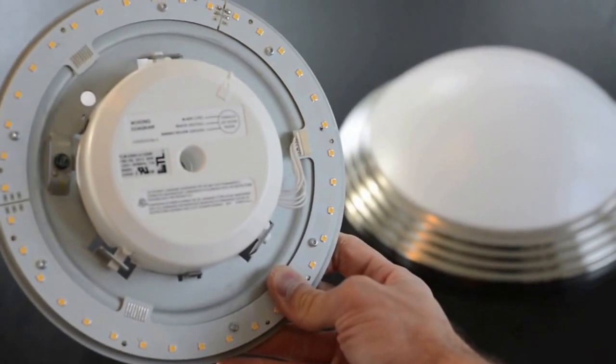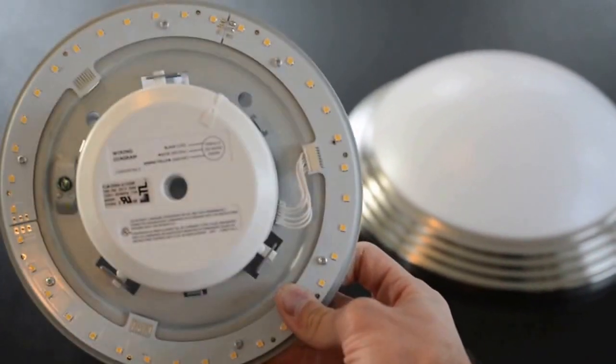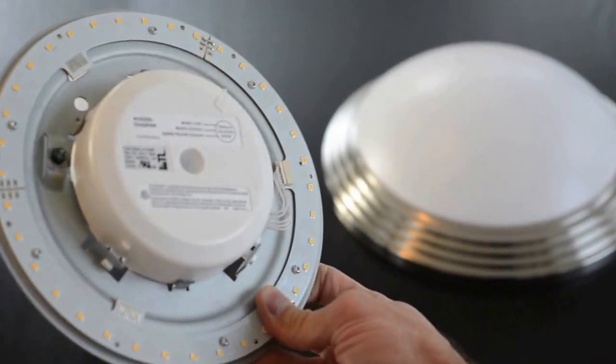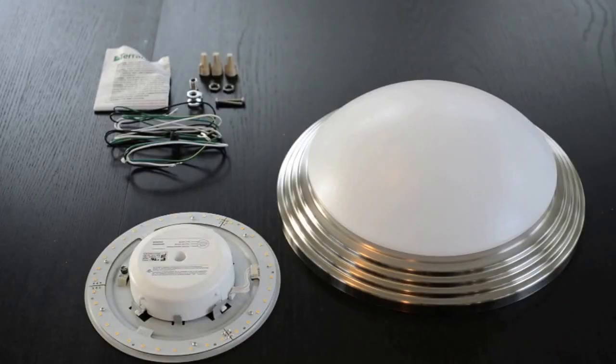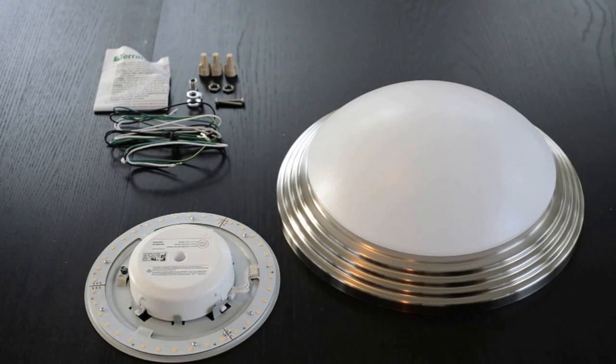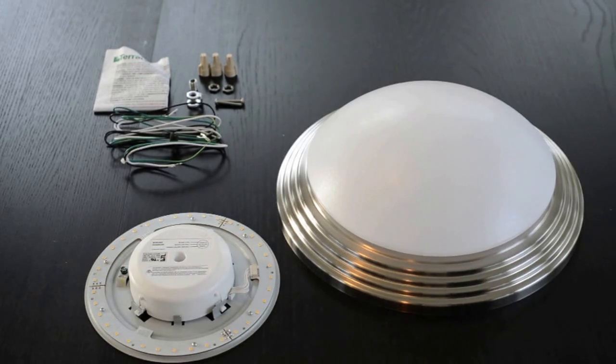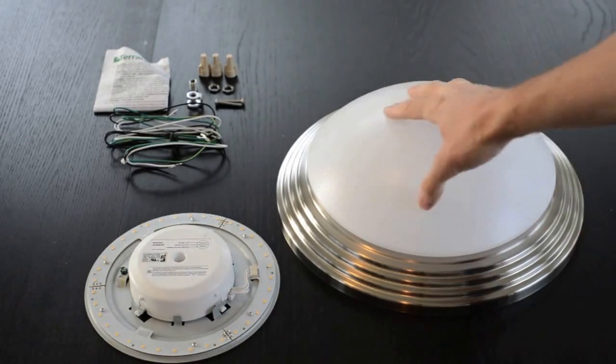Today we're on-site installing the Terralux LED Circular Engine into this 24-watt CFL fixture. Before beginning any electrical installation, be sure to turn off the power to the circuit that maintains the fixture.